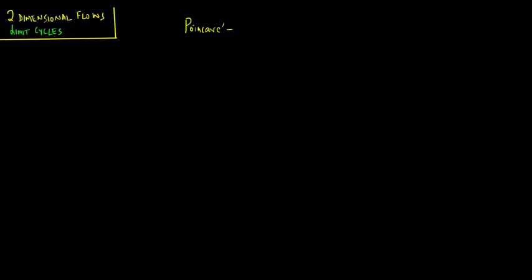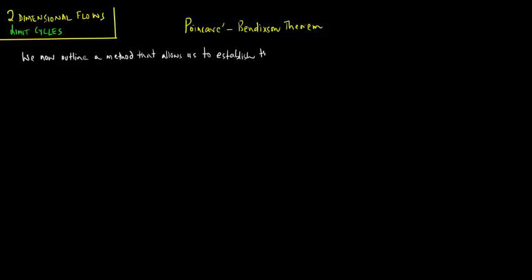In this lecture, we focus on the Poincaré-Bendixson theorem. We now outline a method that allows us to establish that closed orbits exist in some systems.